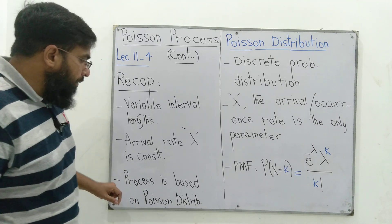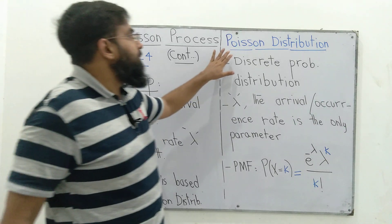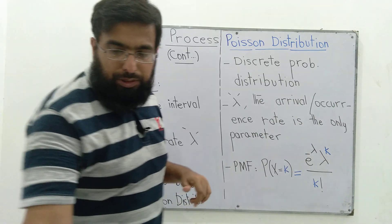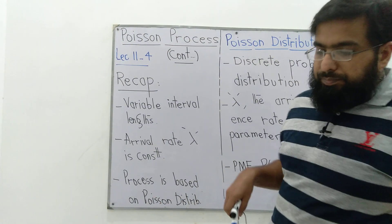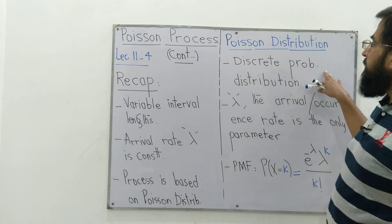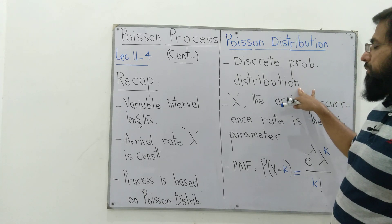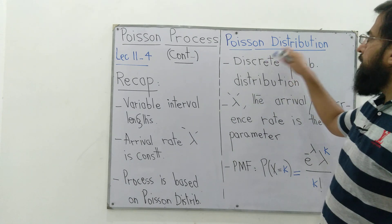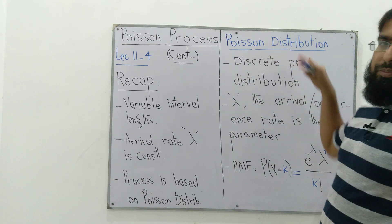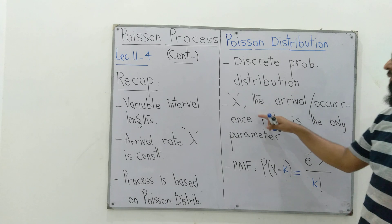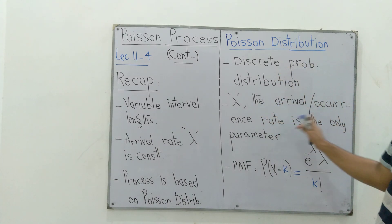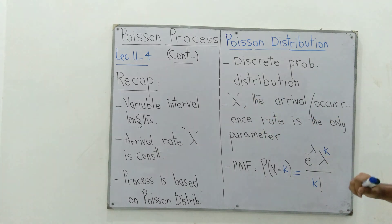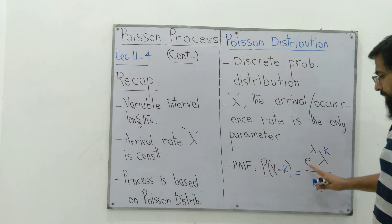Poisson distribution is a very famous distribution, usually taught in undergrad. It's a discrete probability distribution. Before we study more about the Poisson process, we will quickly go through the Poisson distribution, which has only one parameter — the arrival or occurrence rate lambda.